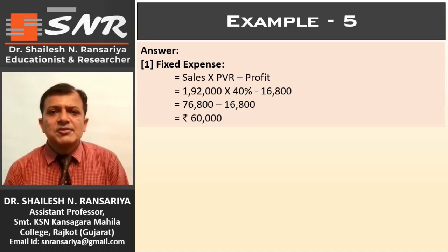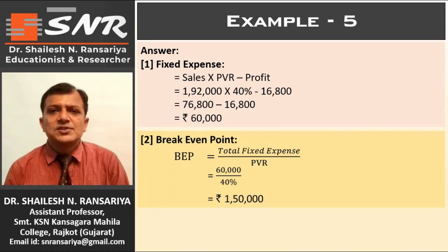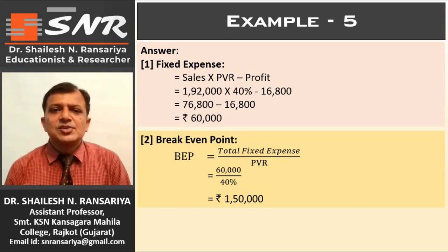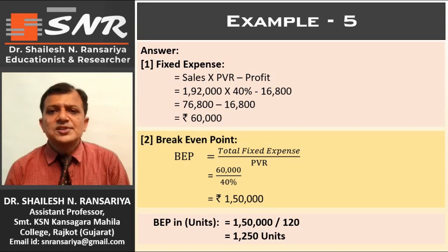Second, break-even point. First we calculate BEP in rupees: BEP = Total Fixed Expenses / PVR = ₹60,000 / 40% = ₹1,50,000. Now to convert to units, we divide by the selling price per unit. BEP in units = ₹1,50,000 / 120 = 1,250 units. Note: to go from units to rupees, multiply by selling price; to go from rupees to units, divide by selling price.